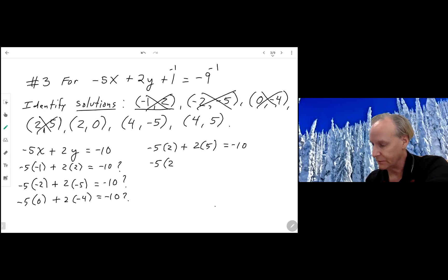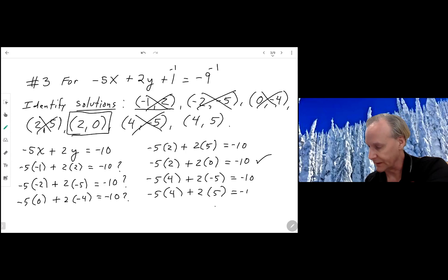Negative 5 times 2 plus 2 times 0. Is that equal to negative 10? And it sure is. So this one is a solution to that equation. In fact, that is called an x-intercept. Let's check the next one. Negative 5 times 4 plus 2 times negative 5 equals negative 10. We have negative 20 plus negative 10 is negative 30. This is not true. So this one is not equal. And finally, we have one more. Negative 5 times 4 plus 2 times 5. Is that equal to negative 10? And sure enough, negative 20 plus 10 equals negative 10. And that is true.